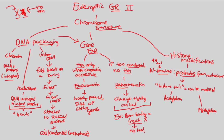Acetylation and methylation do not occur in prokaryotes, because prokaryotes do not have the advanced DNA packaging that eukaryotic organisms do. Thus, they can't undergo acetylation or methylation to the same extent that we do.